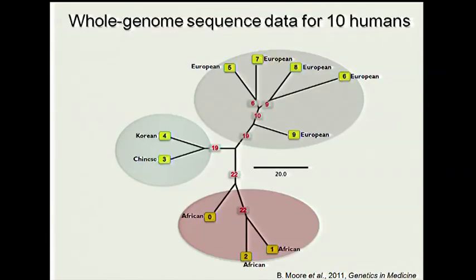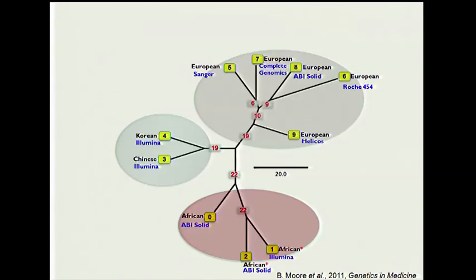With complete sequence data from 10 whole genome sequences, we again see European, Asian, and African individuals forming groups based on geographic origin. Interestingly, two sequences from the same individual sequenced on different platforms — Illumina versus ABI SOLiD — showed about 500,000 differences, roughly the same as between two different individuals on the same platform. This is a cautionary note about the number of differences we can see depending on which sequencing platform is used.